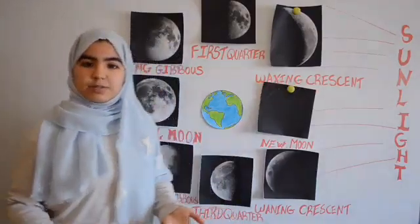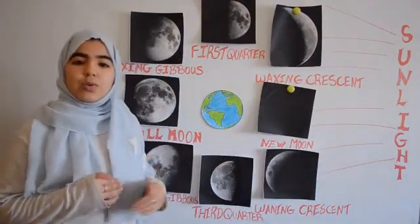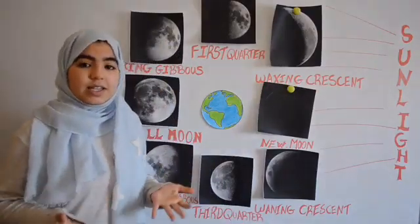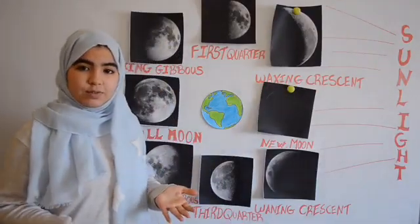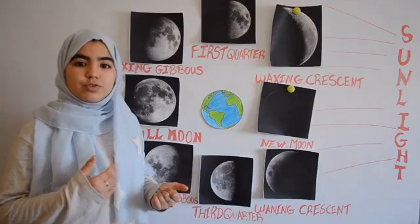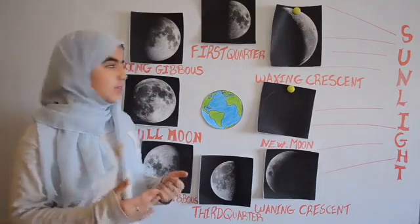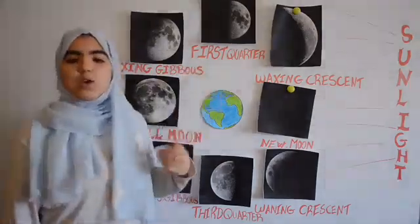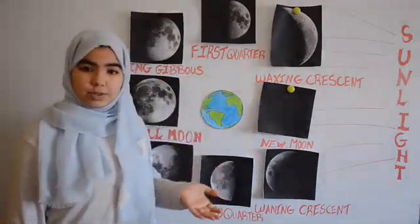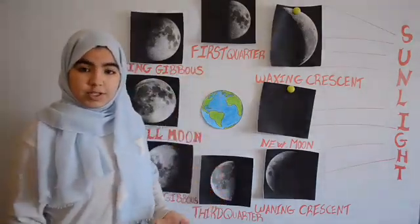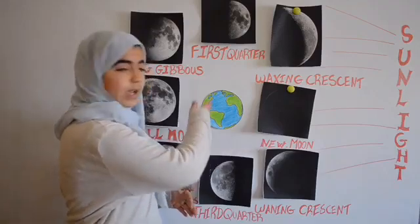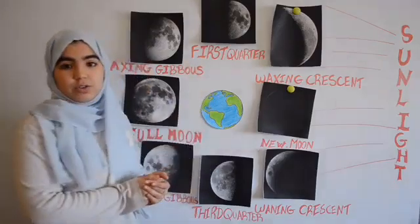The crescent moon will grow a little thicker every night until it becomes half full, and the moon reaches its next phase — first quarter. We call it first quarter because the moon is now one quarter of the way through its cycle.